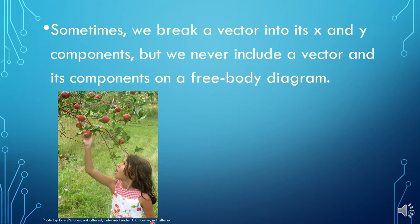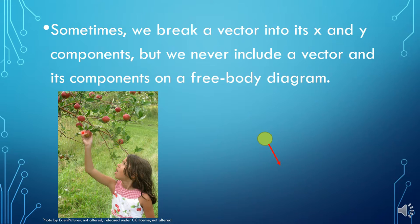Sometimes we break vectors into their x and y components, but we never include a vector and its components on the same free body diagram. If we did that, it would be like doubling that force. For example, here we have a child pulling on an apple. We draw the force applied by the child and then break it down into its x component and y component. We then get rid of that diagonal force, because if I kept it there I would be doubly representing that force. So if you break a force into its x and y components, you get rid of the original vector.